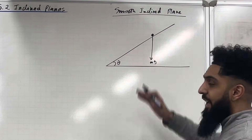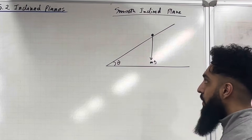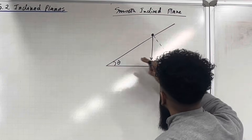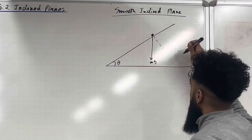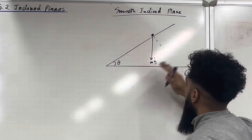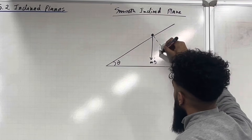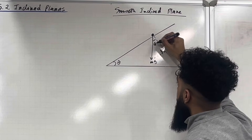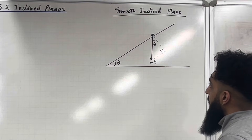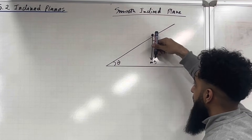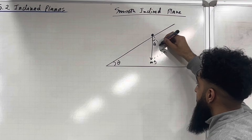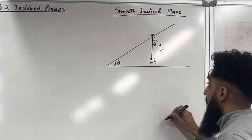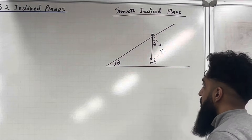Now this weight has component forces. We can form a right-angle triangle. This component over here is perpendicular to the plane, and this component over here is parallel to the plane. The angle here is 90 degrees, and it can be shown that this angle is theta. Because this weight is acting vertically downwards, the arrow for the perpendicular component will be in this direction, and the arrow for the parallel component will be in this direction.